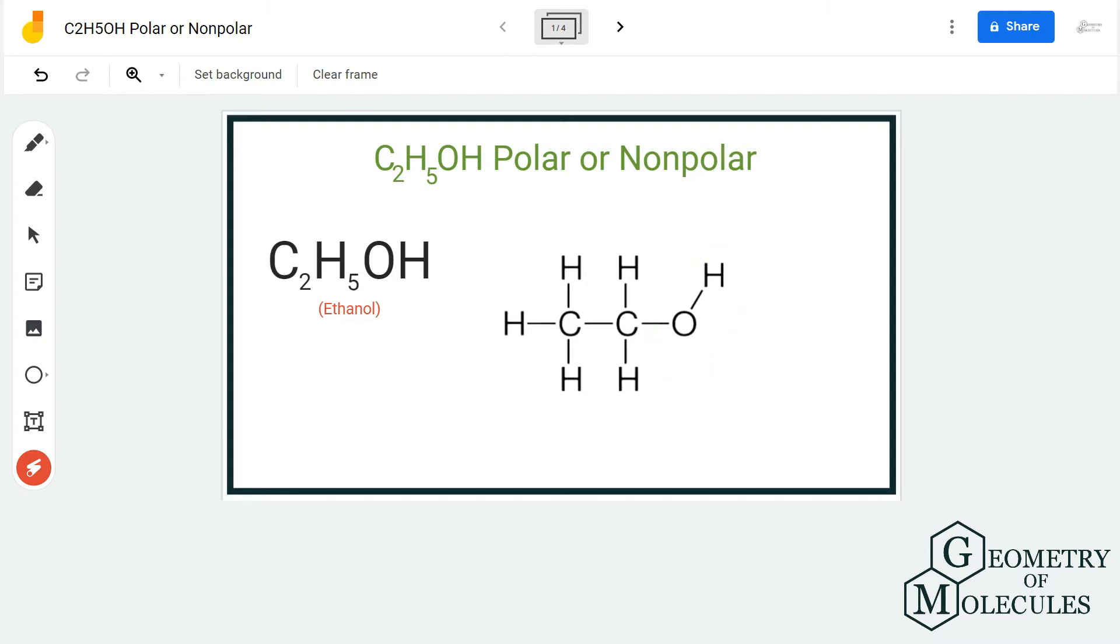When you look at this Lewis structure, you can see this arrangement is quite asymmetric. Generally, molecules that have asymmetric arrangement of atoms are polar, but to confirm it further we are going to look at the shape as well as the difference of electronegativities.